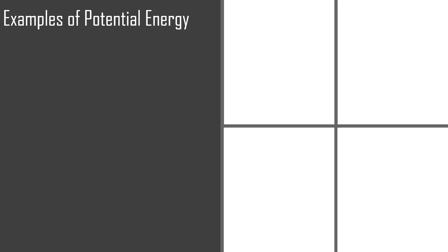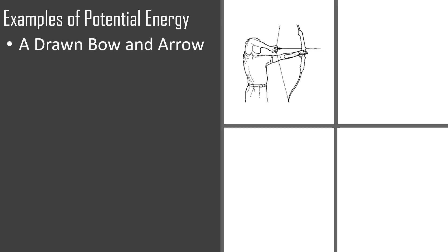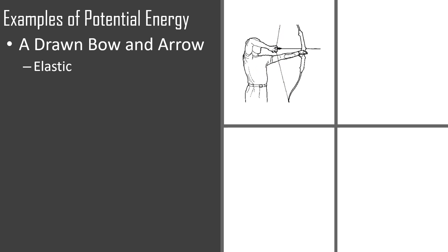Here are some examples of potential energy. We have a drawn bow and arrow — this is an example of elastic potential energy because the bowstring is being pulled backwards, creating a potential energy to shoot the arrow forwards. It's creating that potential energy in an elastic form.